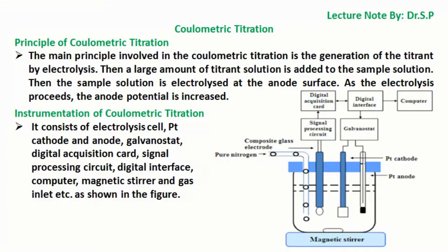Instrumentation of coulometric titration consists of an electrolysis cell, platinum cathode and anode, galvanostat, digital acquisition card, signal processing circuit, digital interface, computer, magnetic stirrer, and gas inlet, as shown in the figure.